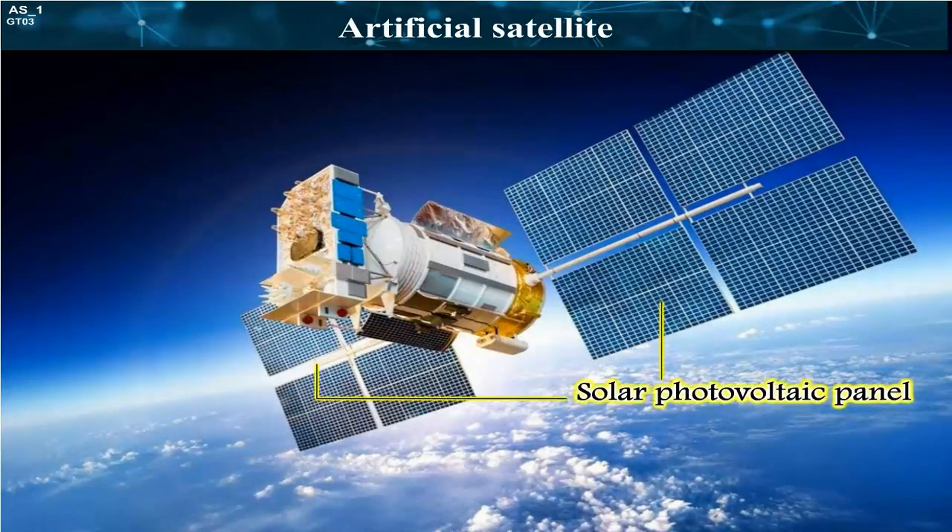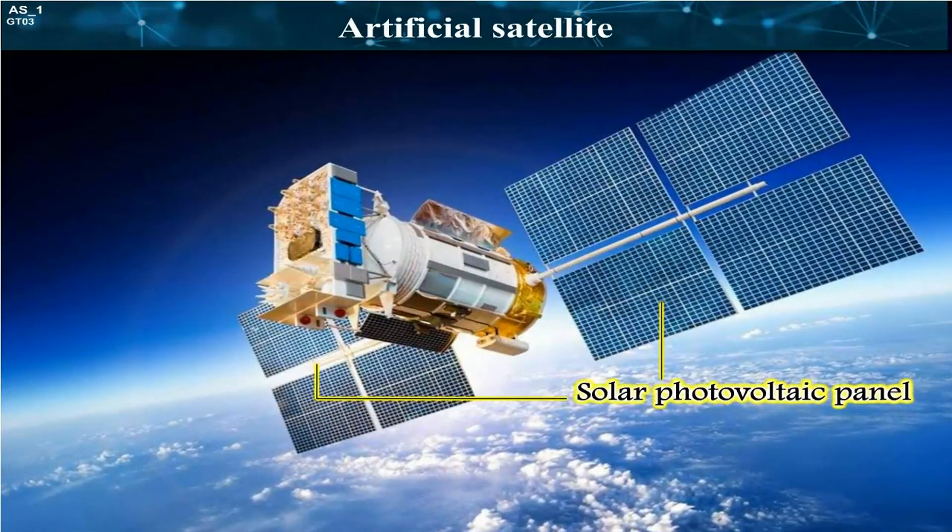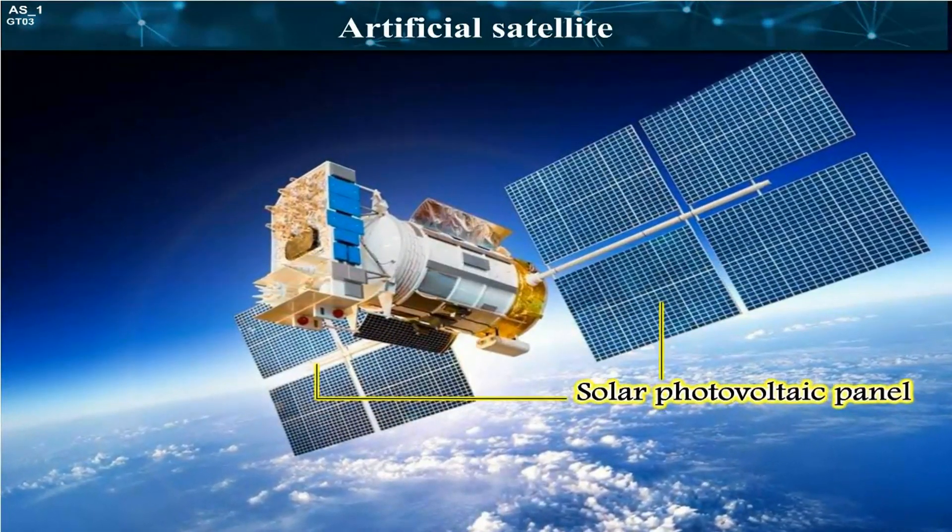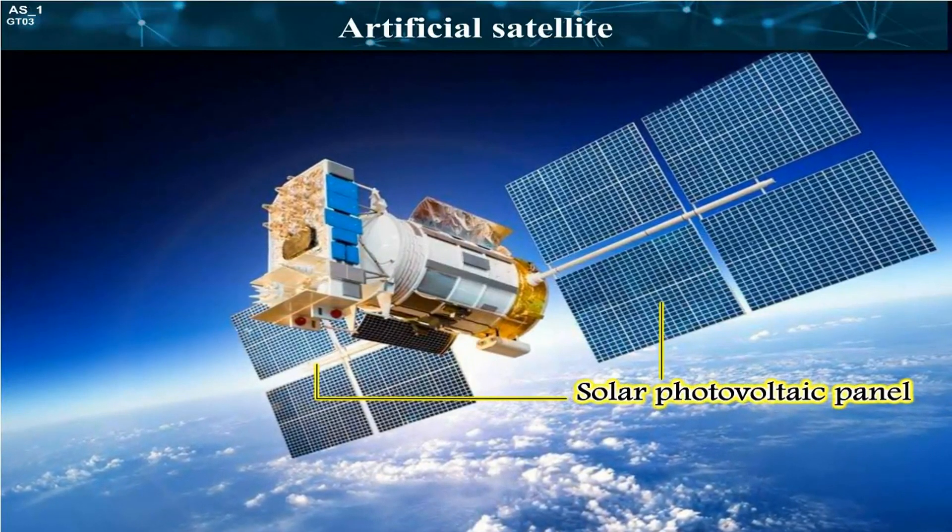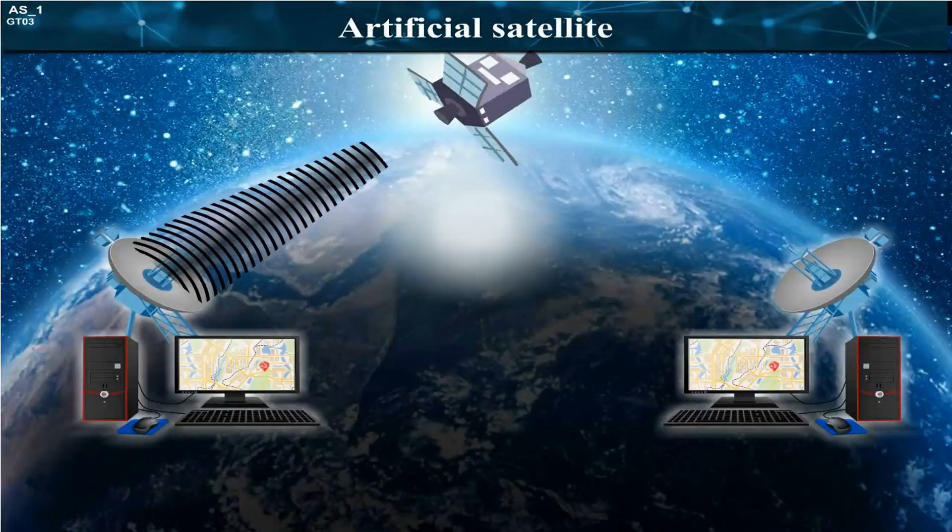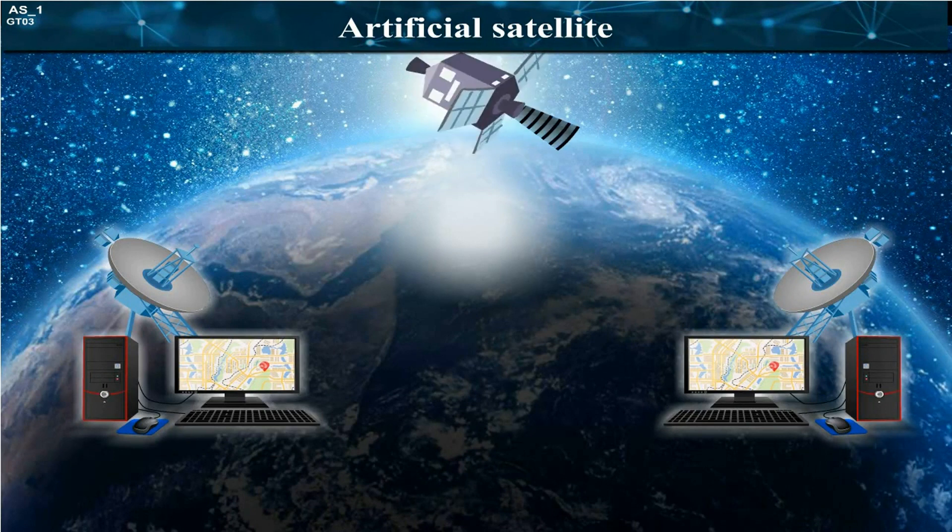Solar photovoltaic panels are attached on both sides of these satellites like wings. Instruments are installed in the satellites to receive and transmit signals from and to the Earth.